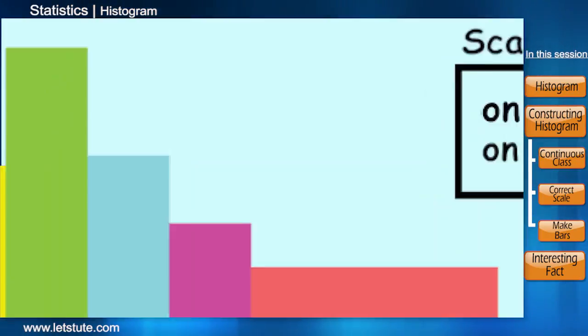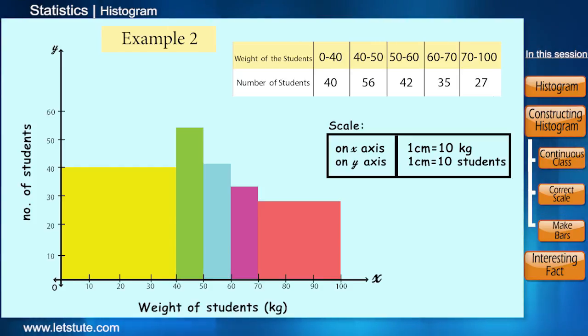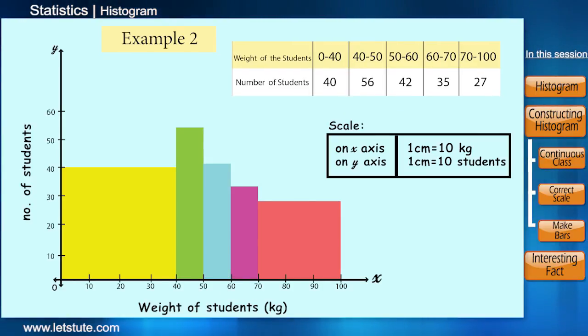But have a look at this histogram. This is a graph showing the weights of the students in the same class. Now here we can observe that the first class is having a width of 40 kgs and the last class is having a width of 30 kgs, while the rest of the classes are having a width of just 10 kgs. Now does this graph give us a correct picture? If I ask you how many students weigh between 20 to 30, you will say 40. And the same answer will be for the weights between 0 to 10 or 10 to 20 or 30 to 40. But isn't that the wrong answer?